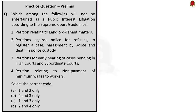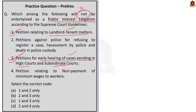The second question is about public interest litigation — which of the following is not entertained as PIL by the Supreme Court. The first and third statements are correct: petitions relating to landlord-tenant matters and petitions relating to early hearing of cases pending in high courts and subordinate courts are not entertained as PIL by the Supreme Court. The correct answer is C — one and three.